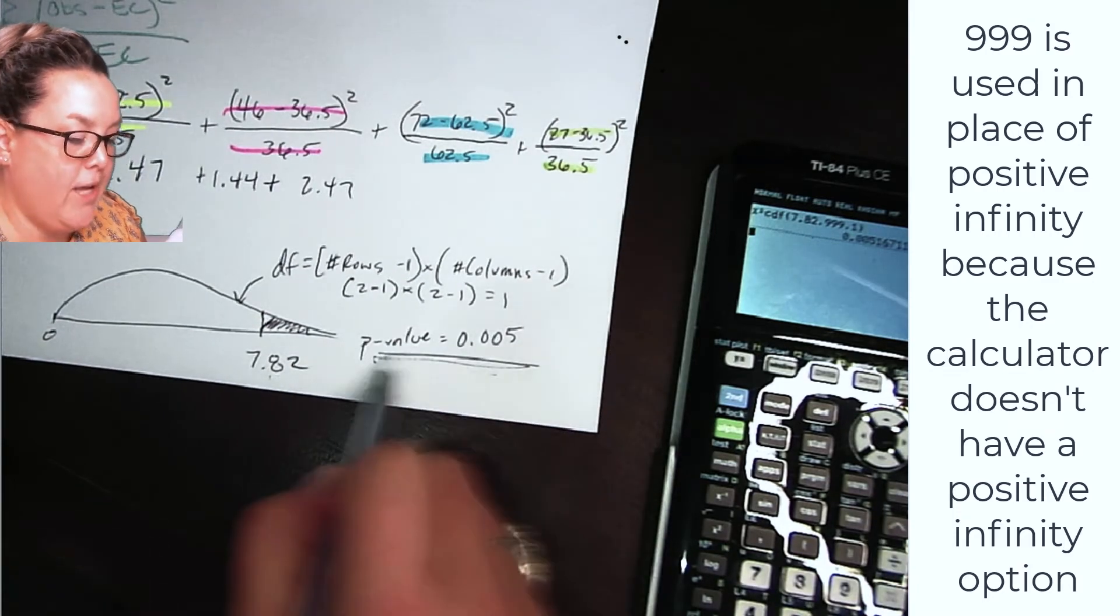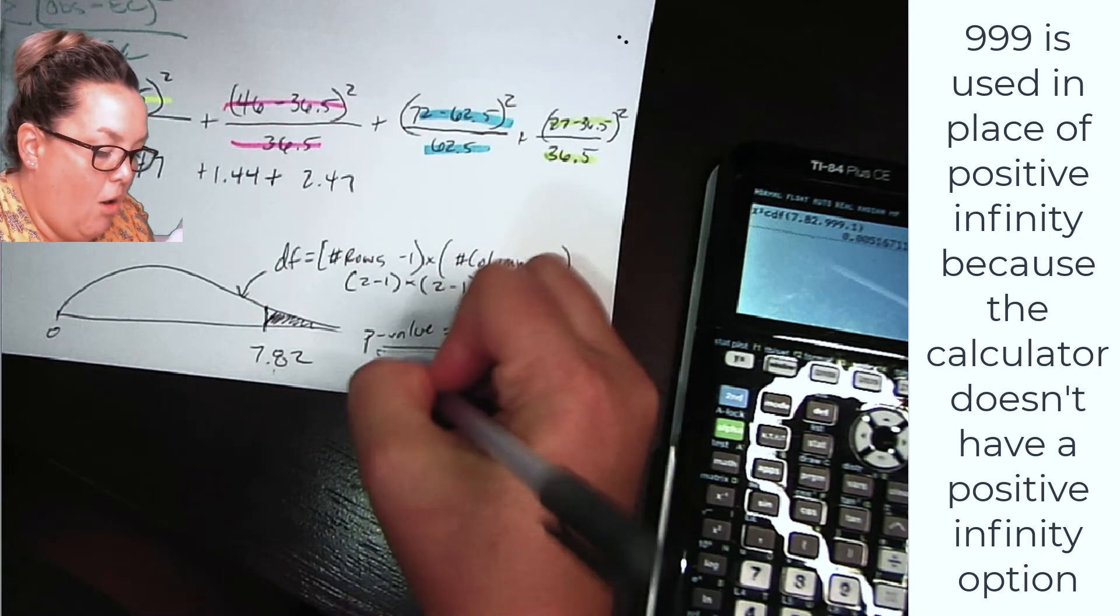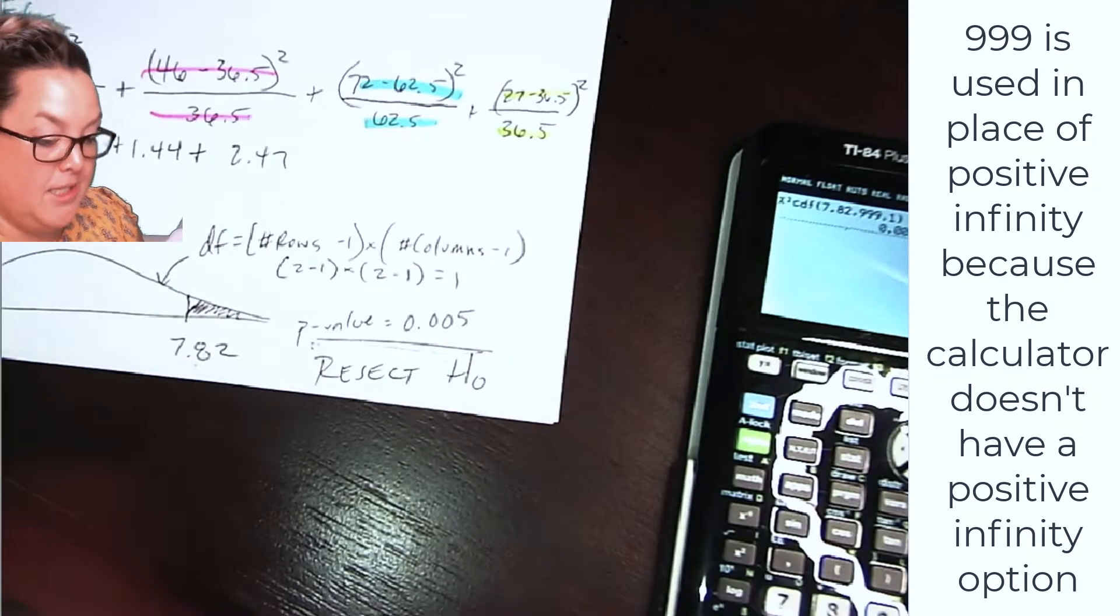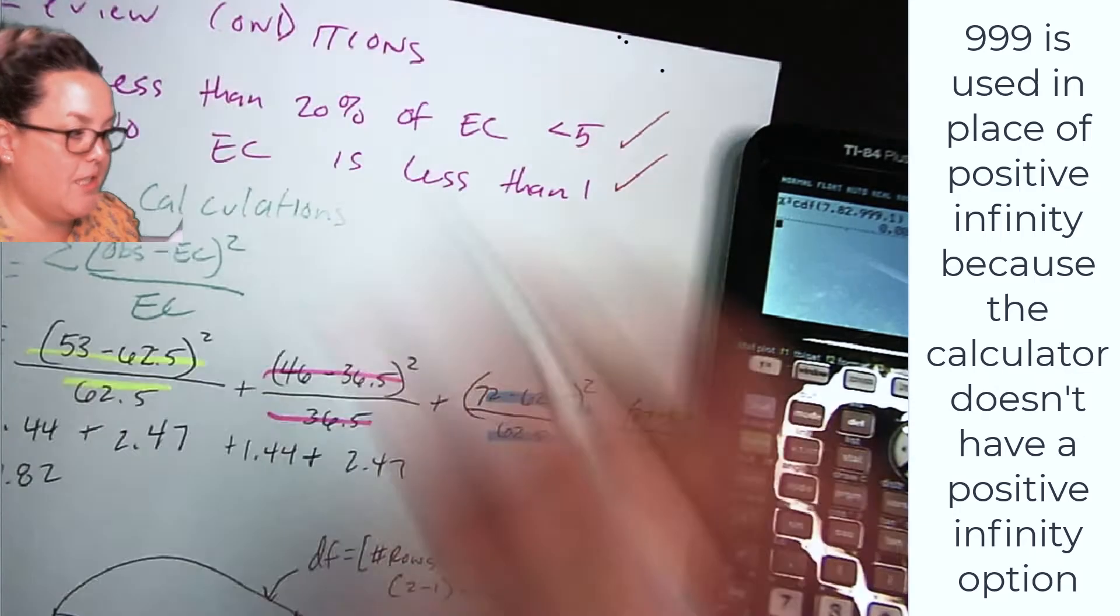Now, if you remember, this is quite small. And so because it's small, we make the decision to reject the null. So if a p-value is small, you reject the null. If it's not small, you don't reject the null. So that is executing calculations.